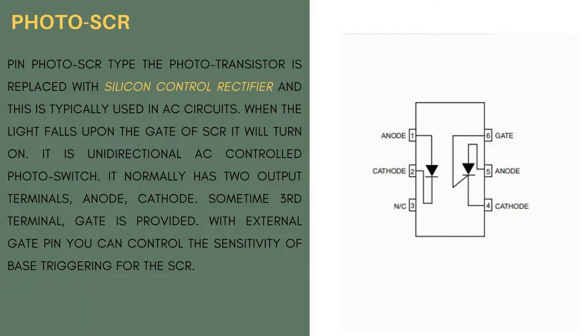In photo-SCR type the photo-transistor is replaced with silicon control rectifier and this is typically used in AC circuits. When the light falls upon the gate of SCR it will turn on. It is unidirectionally AC-controlled photo switch. It normally has two output terminals: anode and cathode. Sometimes a third terminal, gate, is provided. With external gate pin you can control the sensitivity of base triggering for the SCR.